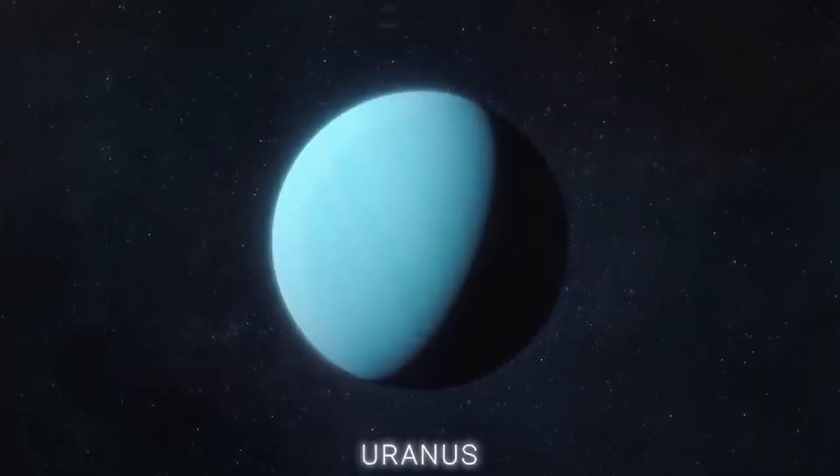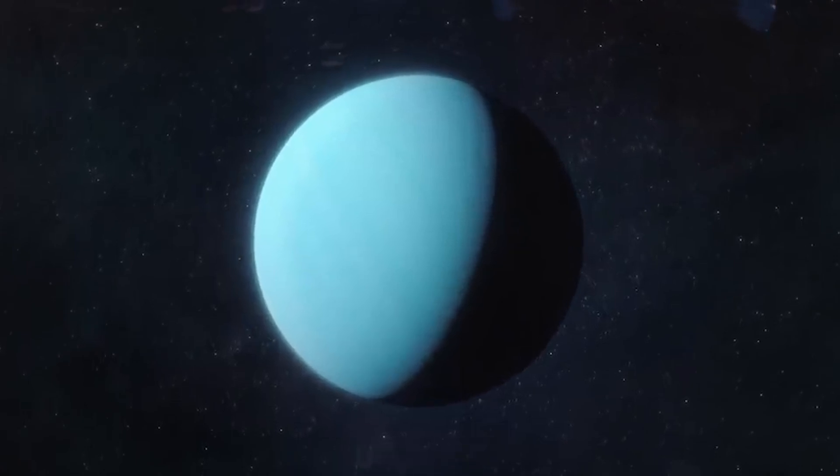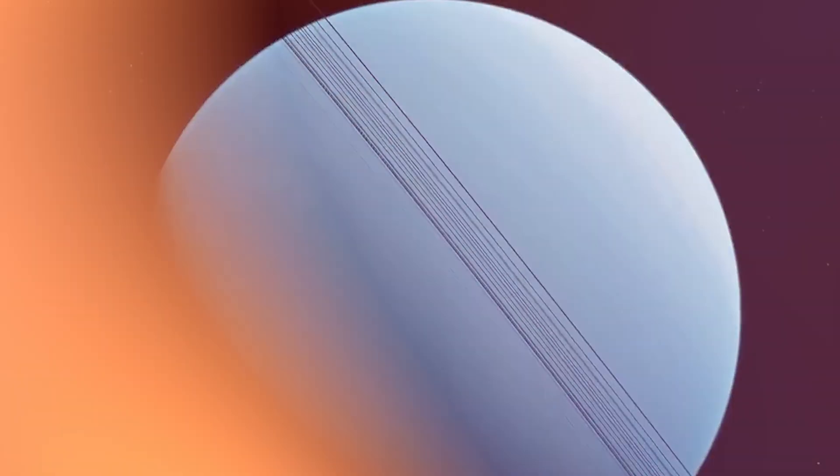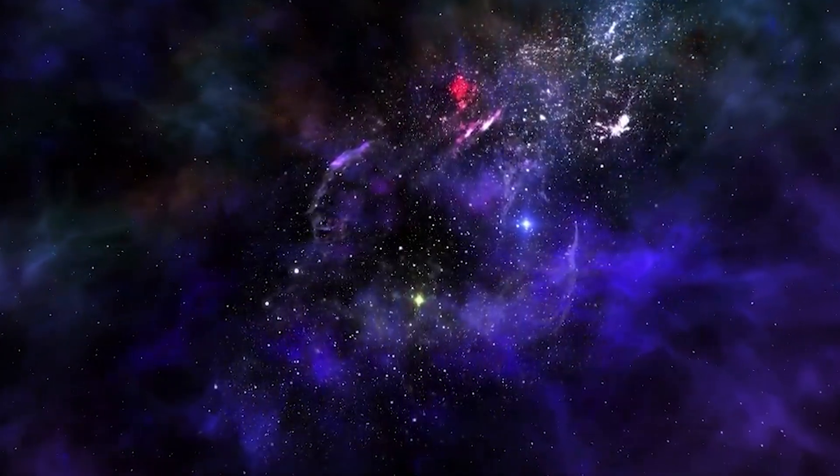Interestingly, Uranus, Neptune's neighboring ice giant, has a similar composition but appears pale blue instead. This difference may be due to variations in the density of methane fog in their atmospheres.